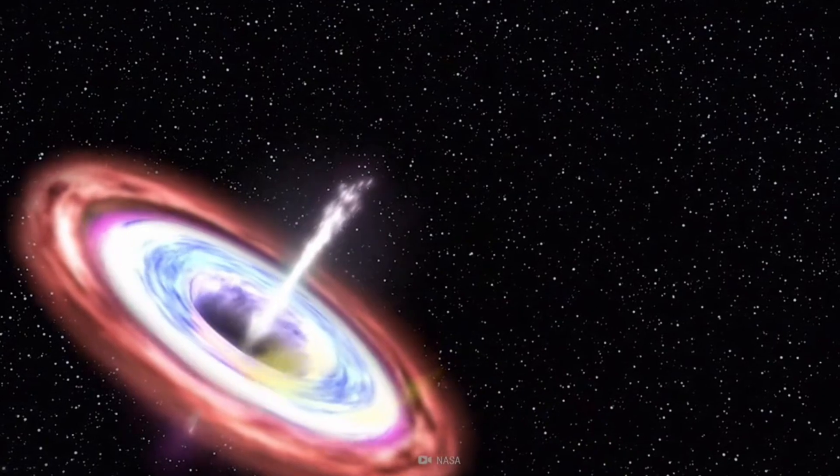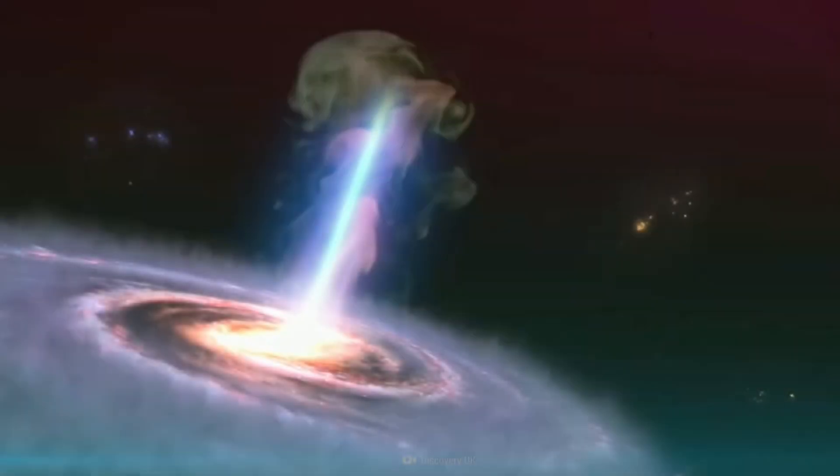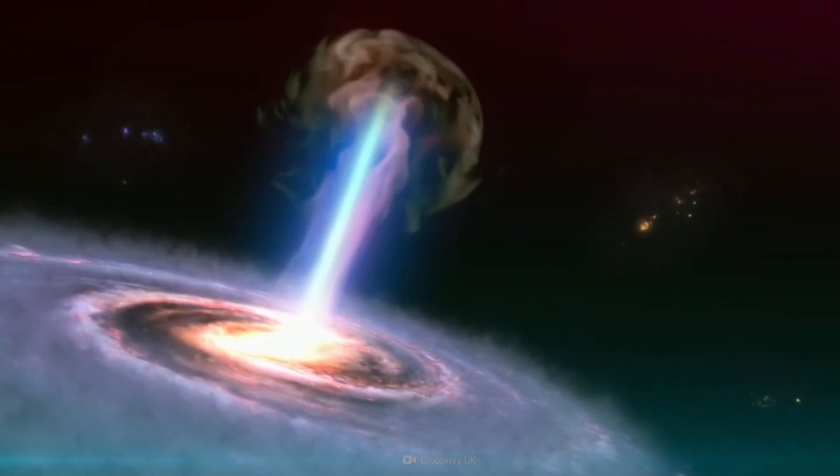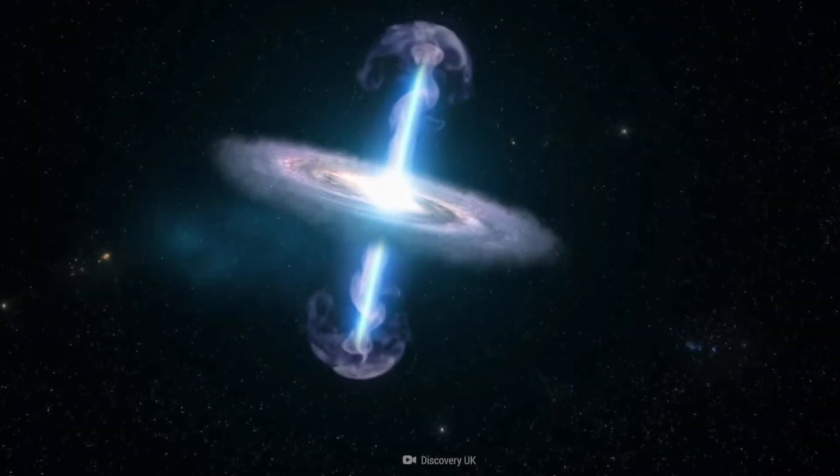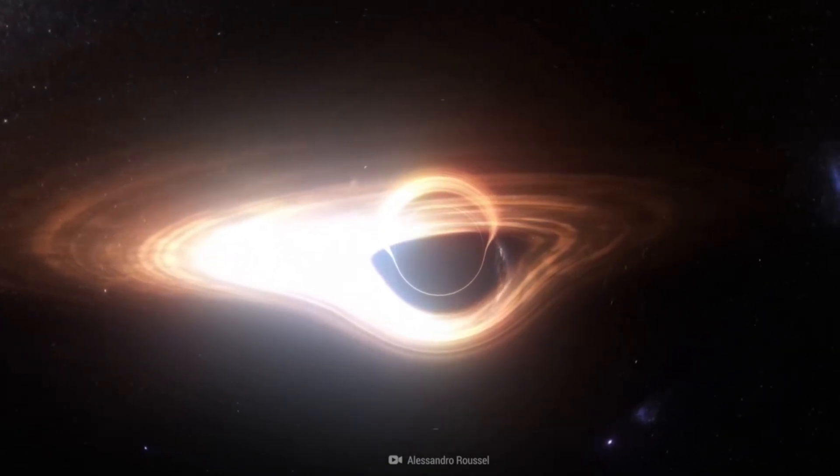Next, it would drift toward Sagittarius A*, the supermassive black hole at the center of the Milky Way. When the two finally collided, the impact would send gravitational waves rippling through the very fabric of spacetime itself.